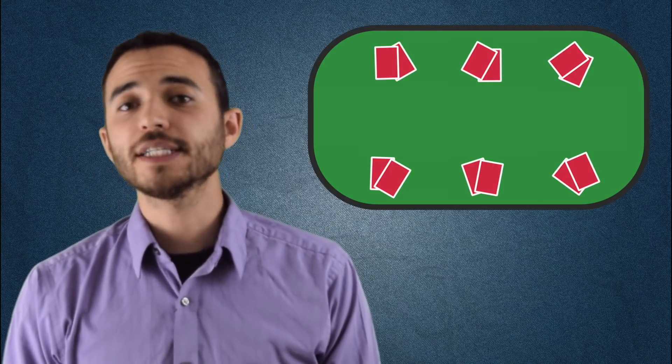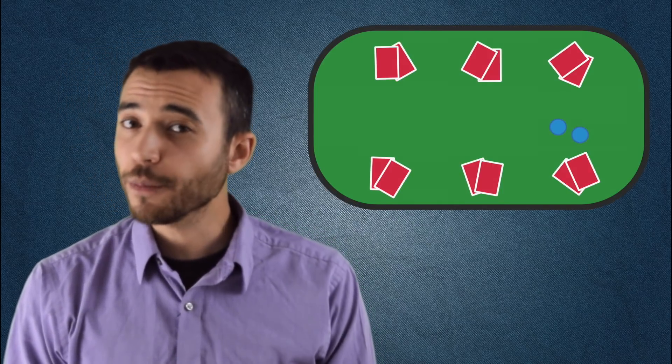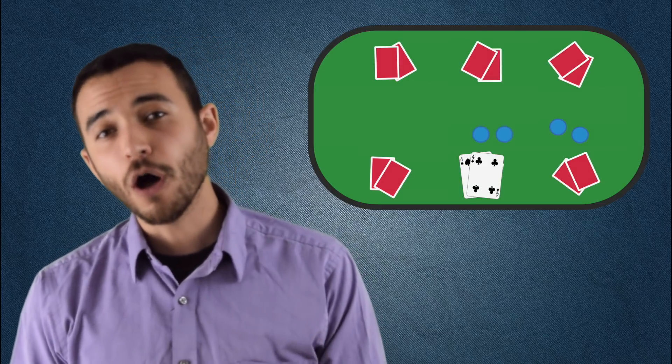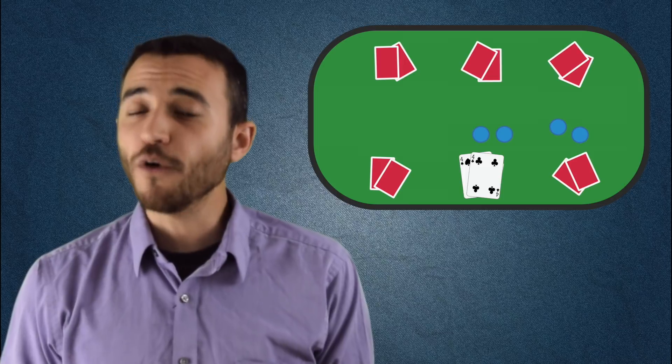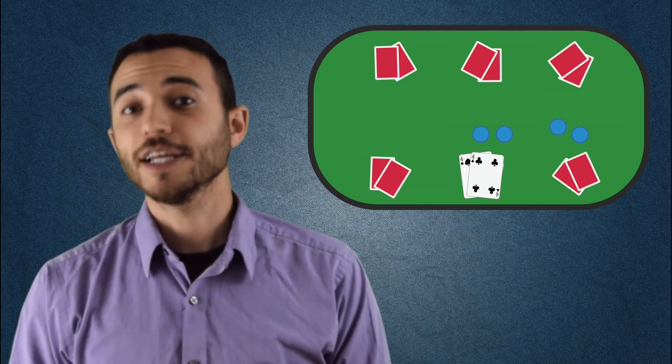Let's start with the basics. We're imagining a scenario like this. A player has opened and you look down and see a pair of fours. You decide to just call and see a flop, knowing that you'll almost certainly fold to any sign of aggression unless you make your set.